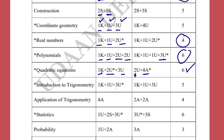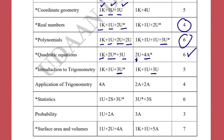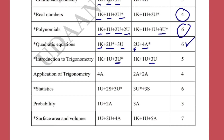In Trigonometry, a fixed three-mark understanding question will come from the last exercise of that chapter. For Applications of Trigonometry, you can get a four-mark question directly with one or two-mark questions. Total allocated marks: four for Applications of Trigonometry and five for Introduction to Trigonometry.